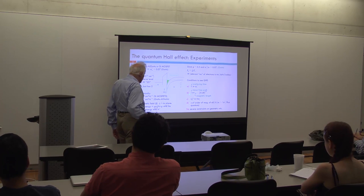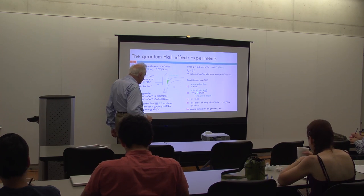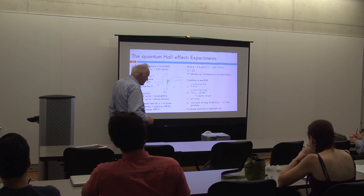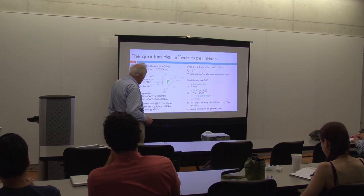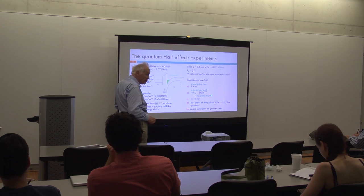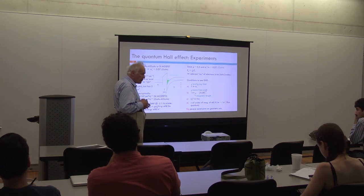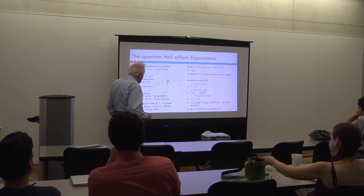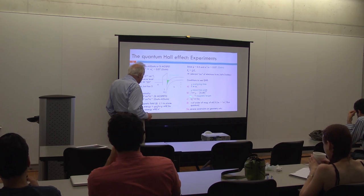A slightly different condition is that the mean free path L must be large compared to the magnetic length, which is √(ℏ/eB) — this depends only on fundamental constants and the magnetic field. For a magnetic field of one tesla, that number is about 250 Ångströms — large compared to typical atomic separations, but small compared to the sample dimensions. Third condition: the thermal energy must be small compared to the cyclotron energy, so you don't get mixing of different cyclotron states.